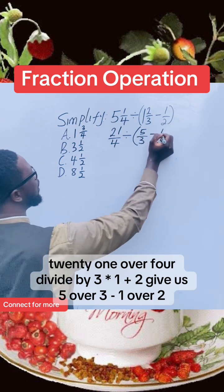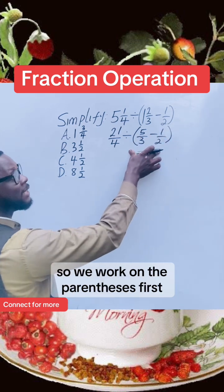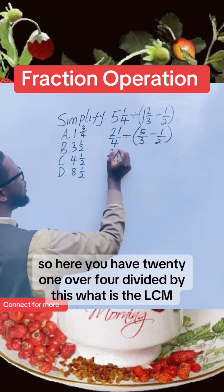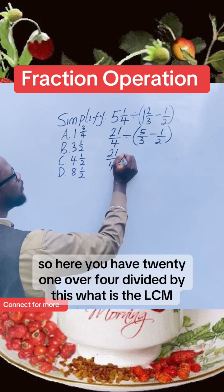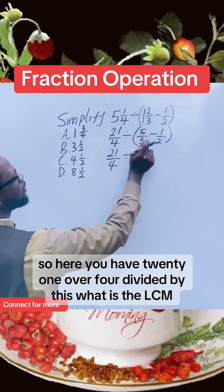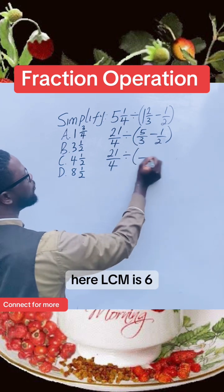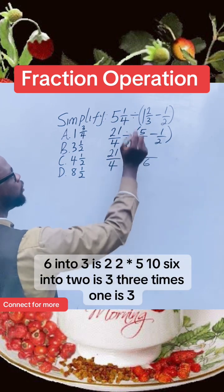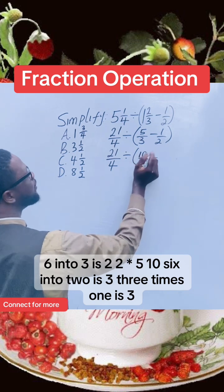So we work on the parentheses first. So here you have 21/4 divided by... the LCM here is six. Six to three is two, two times five is ten. Six to two is three, three times one is three.